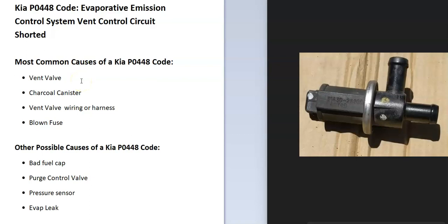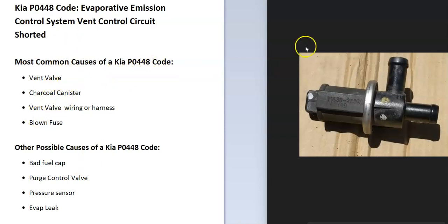The most common cause of a Kia P0448 code is going to be a vent valve, charcoal canister, the vent valve wiring, or possibly a blown fuse. It's also possible it's other things, but usually if it's those, you'll get other codes too. If you're only getting the P0448 code, then it's very likely going to be something to do with the vent valve.